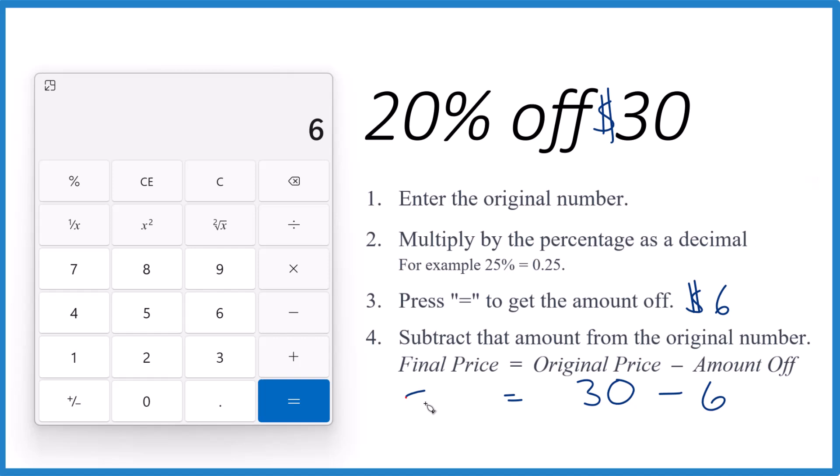Our final price is 24. So 24, that's the price you're going to pay after you take the 20% off. That's $6. That's your savings.